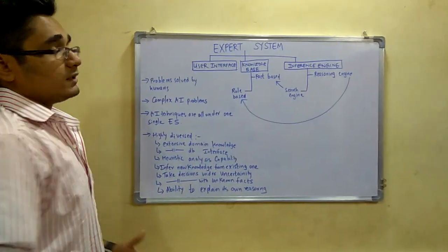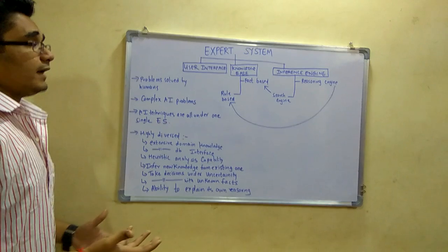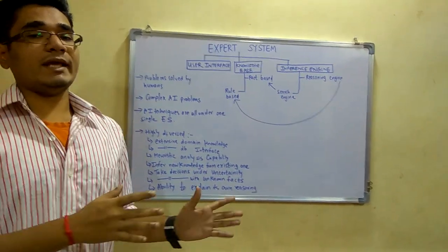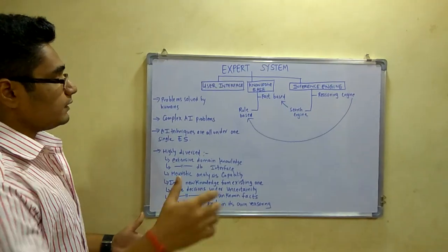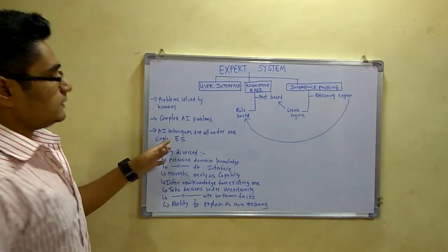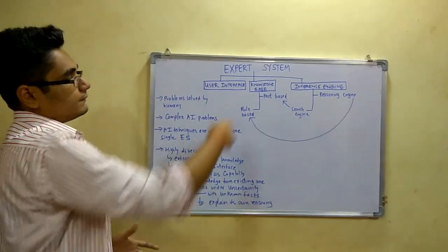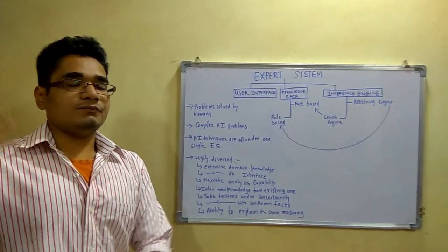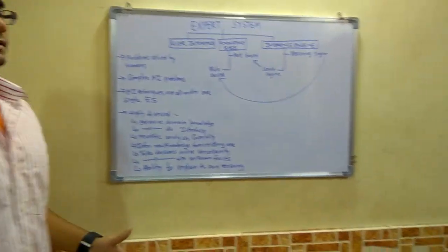Expert systems are categorized as complex AI problems. All the AI problems like A-star algorithm and cryptarithmetic problems come under expert systems. There are other domains at a higher level hierarchy than expert systems.